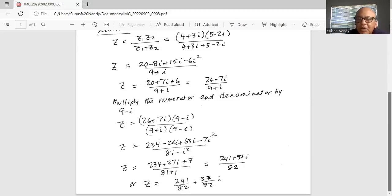A plus b times a minus b is a squared, which is 9 squared minus b squared minus i squared. Now i squared is minus 1. So we replace i squared by minus 1 in the numerator and in the denominator. So we have 234 minus 26 plus 63 is plus 37i and minus 7 times minus 1 becomes plus 7 divided by 81 plus 1.